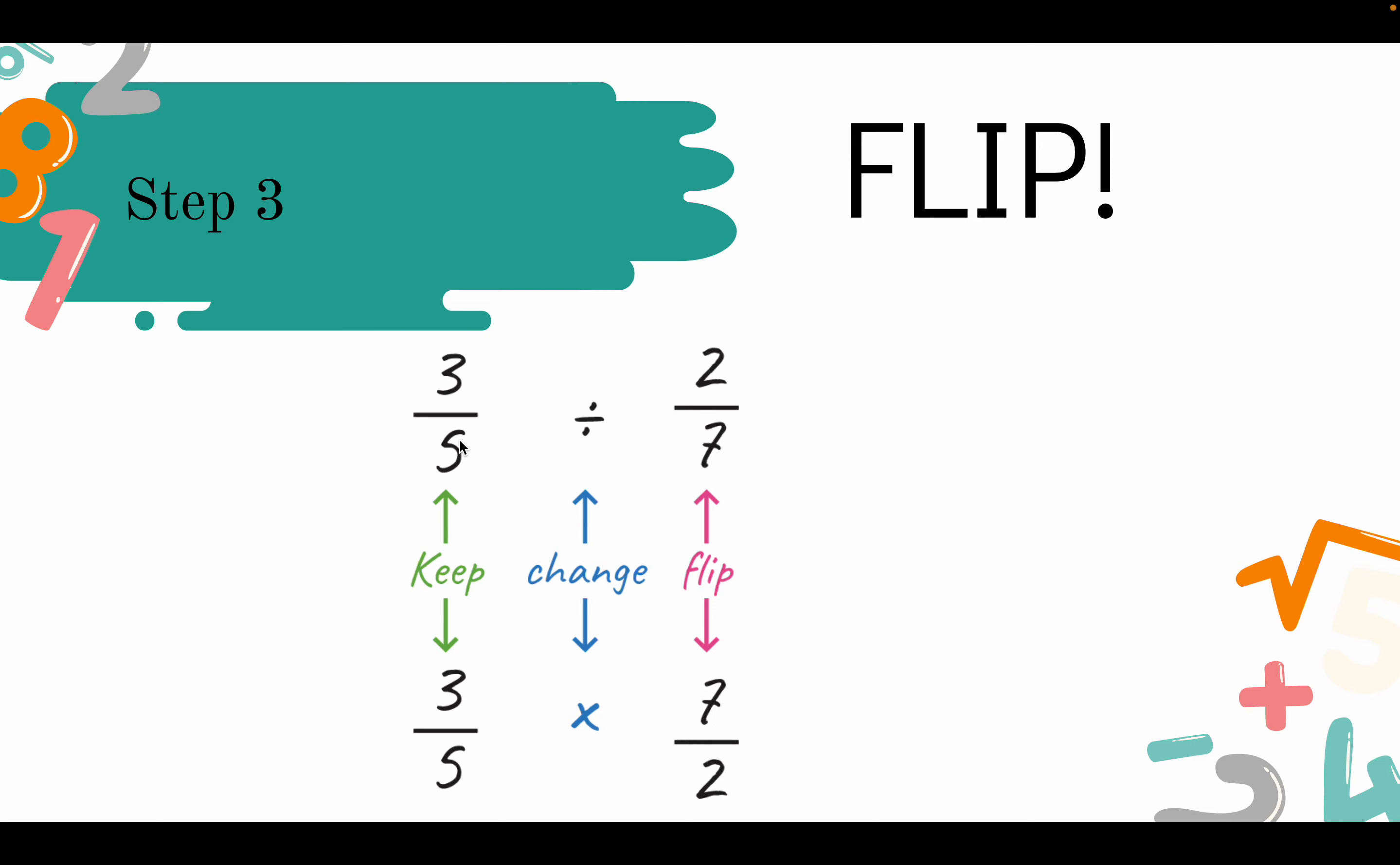This is super easy because all you have to do is just keep the first fraction, change the symbol, and flip the last fraction. So it goes to 3 fifths times 7 over 2.